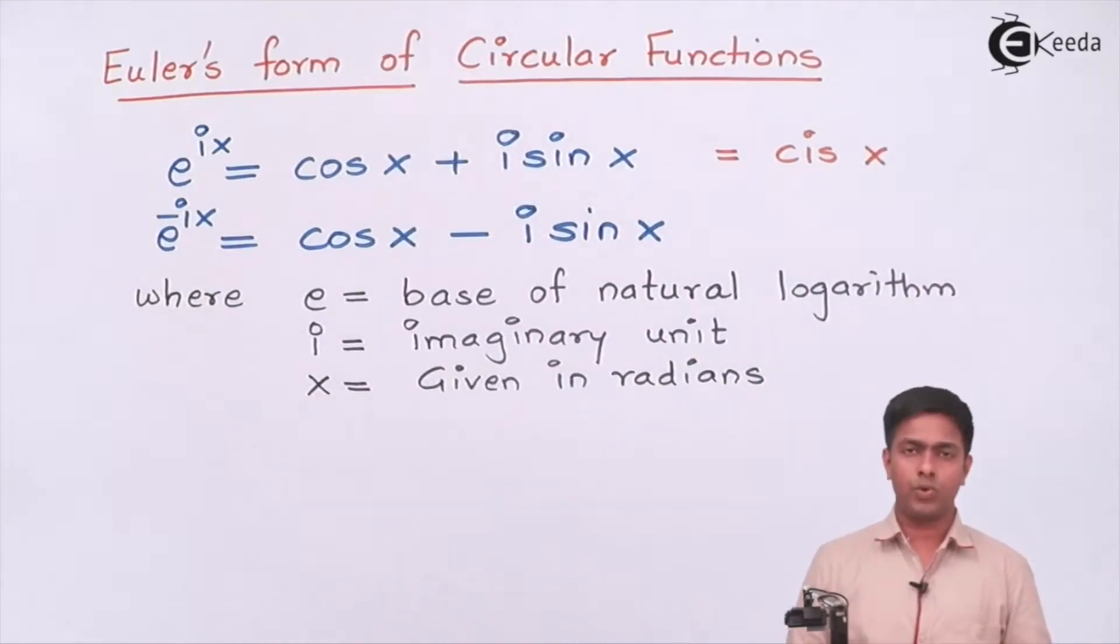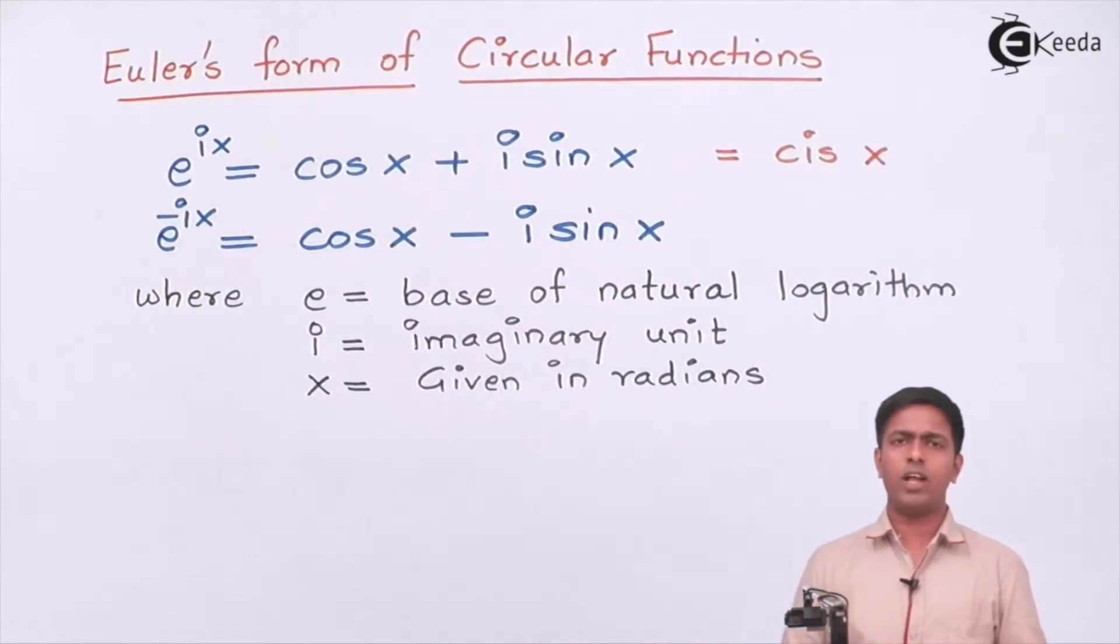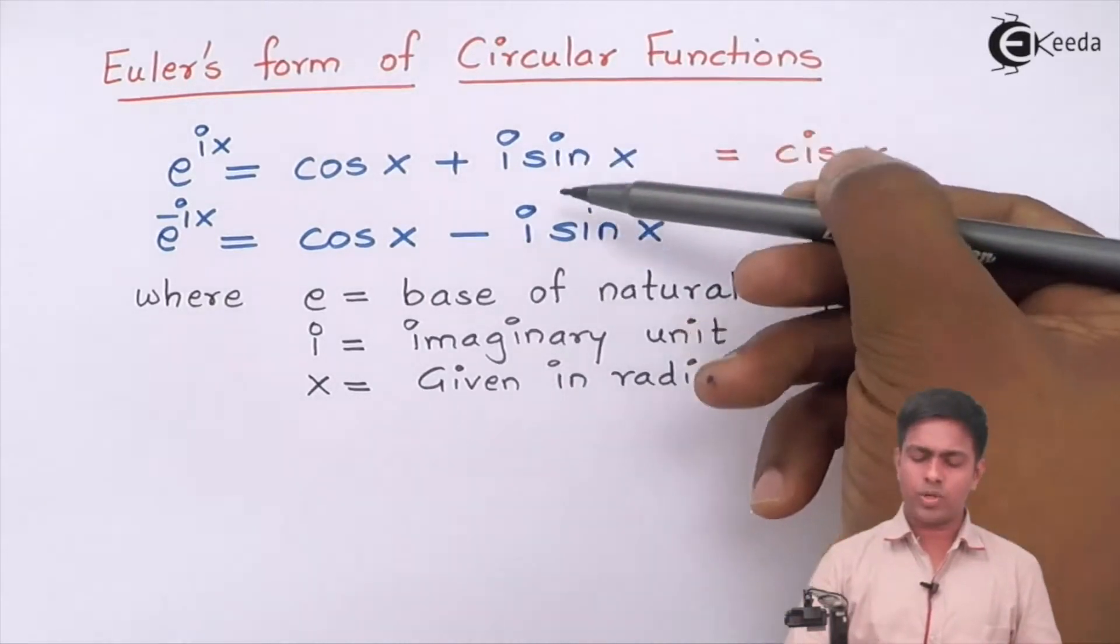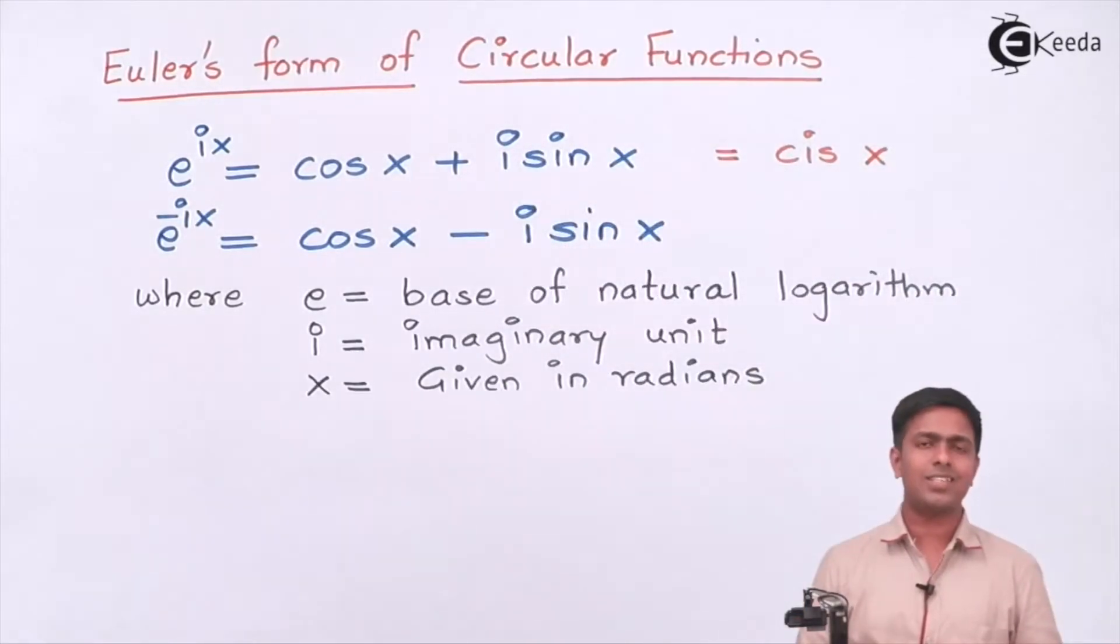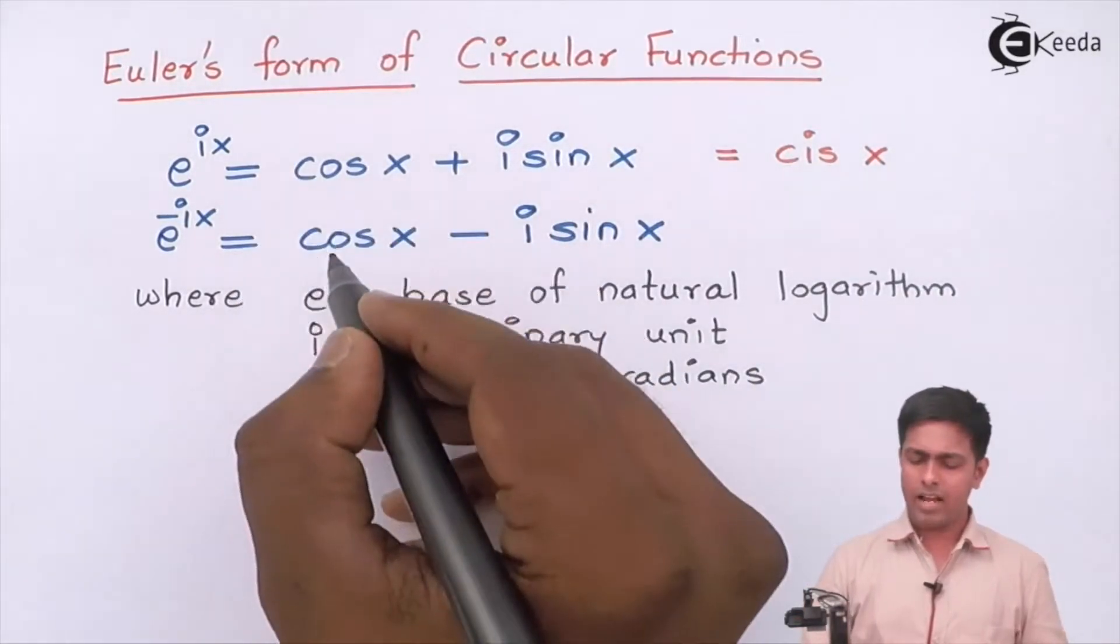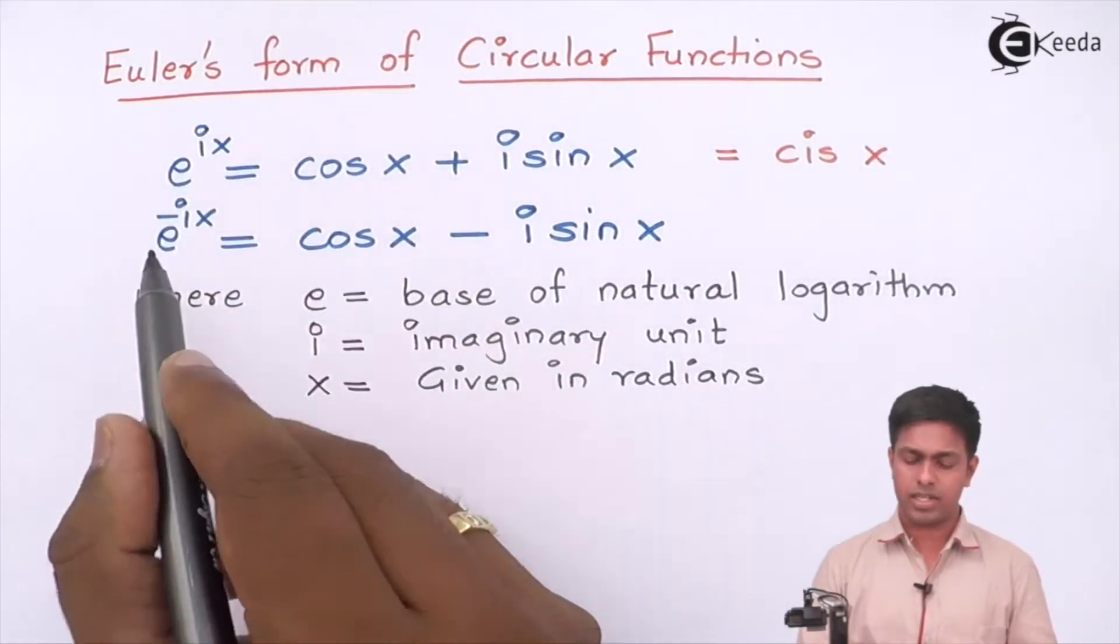Now by using this formula we can get other formulas of trigonometric functions. If I ask you what is the value of cos x in terms of exponential function, you would say just add these two results. By adding, i sin x and -i sin x will be eliminated and we get 2 cos x = e^(ix) + e^(-ix).